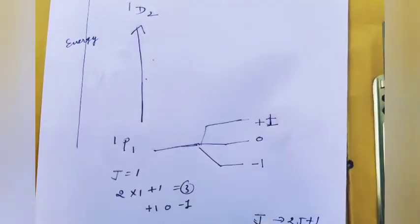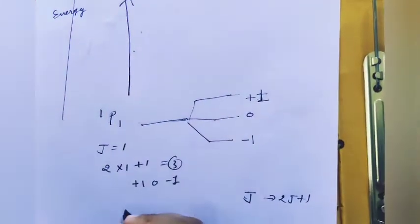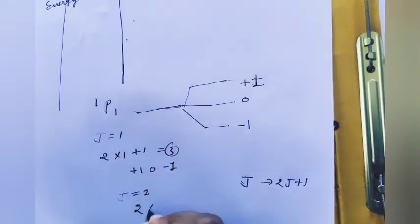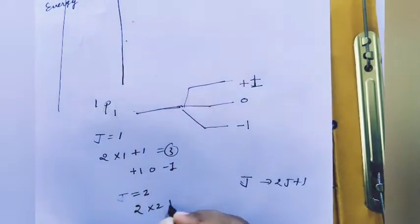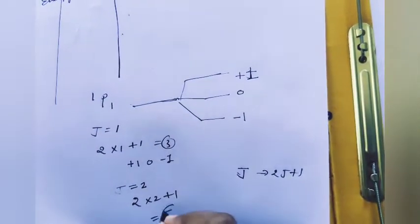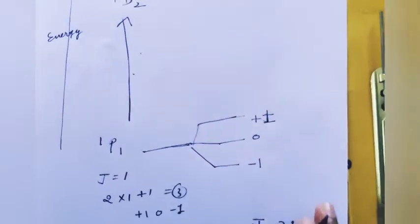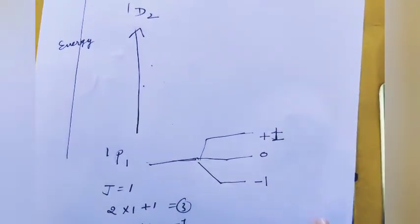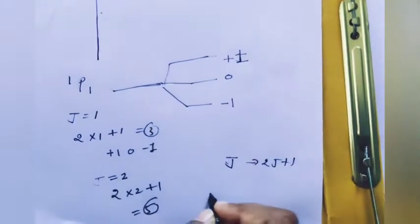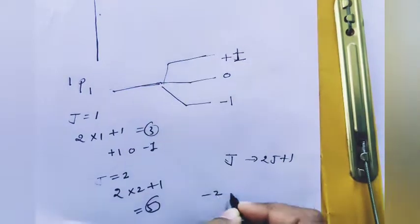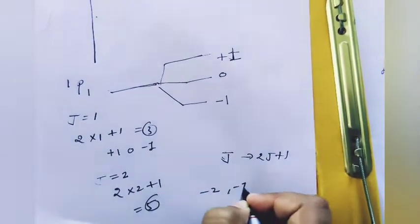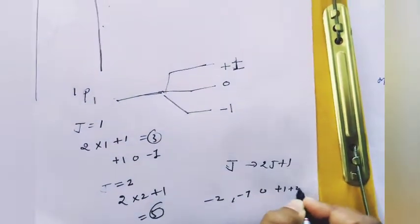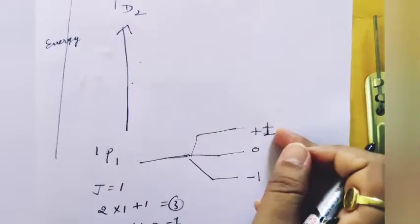For 1D2, J equals 2, so the number of mJ values is 2 times 2 plus 1 equals 5. The mJ values are minus 2, minus 1, 0, plus 1, and plus 2.